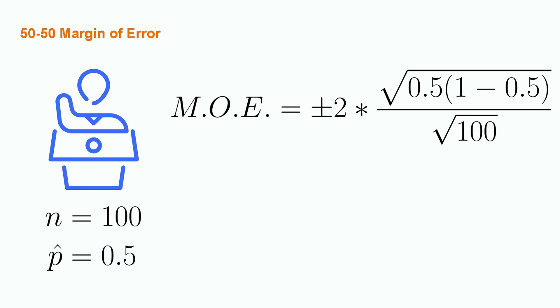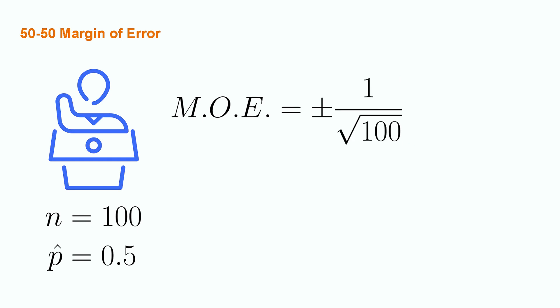Focusing on the numerator for a moment, we know that 1 minus 0.5 is just equal to 0.5, which means that we can temporarily rewrite the numerator as 0.5 squared. From here, we know that the square root and the square operation cancel out. We can now write our margin of error as plus or minus 2 times 0.5 divided by the square root of our sample size. Well, we know that 2 times 0.5 is just 1, so we can rewrite our margin of error as plus or minus 1 divided by the square root of our sample size of 100. This is much simpler than the original equation, but both return the same number.